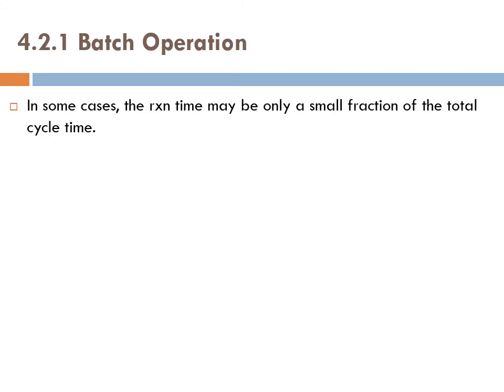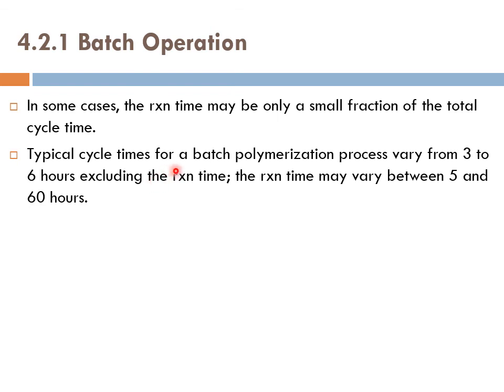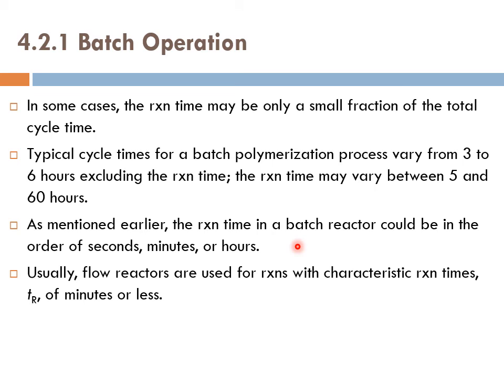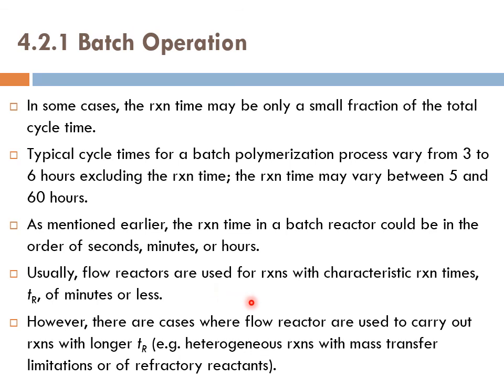In some cases, the reaction time may be only a small fraction of the total cycle time. Typical cycle times for a batch polymerization process vary from 3 to 6 hours, excluding the reaction time. The reaction time may vary between 5 and 60 hours. As mentioned earlier, the reaction time in a batch reactor could be in the order of seconds, minutes, or hours. Usually, flow reactors are used for reactions with characteristic times tR of minutes or less. However, there are cases where flow reactors are used to carry out reactions with longer tR. For example, you have heterogeneous reactions with mass transfer limitation or of refractory reactants.